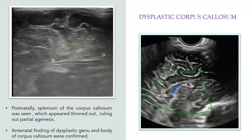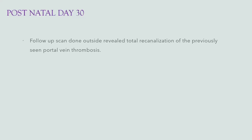The splenium of the corpus callosum was seen on postnatal ultrasound, which appeared thinned out, ruling out partial agenesis. Antenatal findings of dysplastic genu and body of corpus callosum were confirmed, and this was finally suggestive of dysplastic corpus callosum. Follow-up scan done on postnatal day 30 outside revealed total recanalization of the previously seen portal vein thrombus.